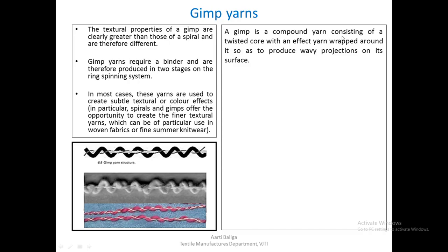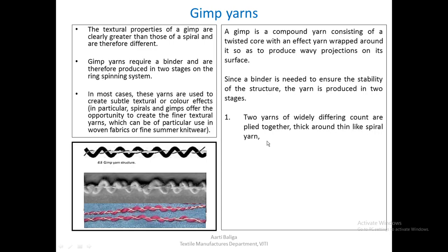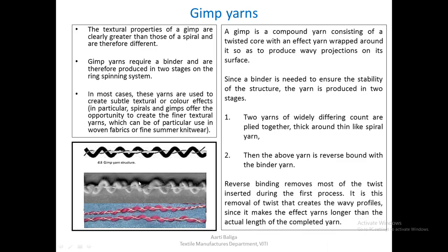A jimp yarn is a compound yarn consisting of a twisted core with an effect yarn wrapped around it so as to produce a wavy projection on its surface — similar in description to the spiral yarn. Since a binder yarn is needed to ensure structural stability, the yarn is produced in two stages: first, two yarns of widely differing counts are applied together thick around thin like a spiral yarn; then the above yarn is reverse-bound with the binder yarn. Reverse binding removes most of the twist from the first process, and it is this removal of twist that creates the wavy profile, making the effect yarns longer than the actual length of the completed yarn.